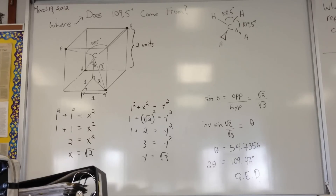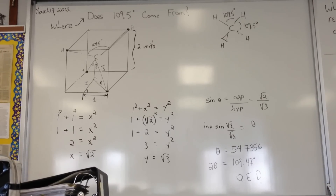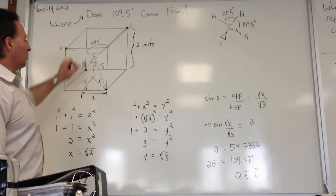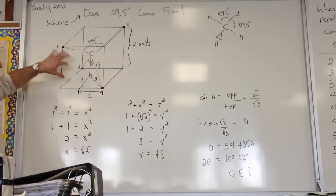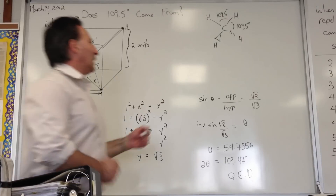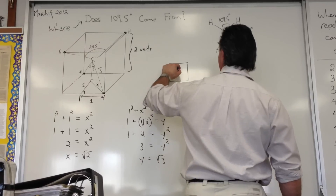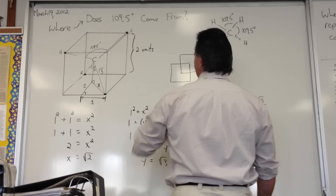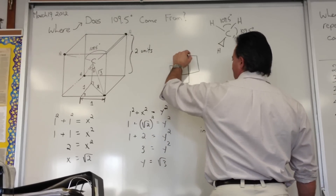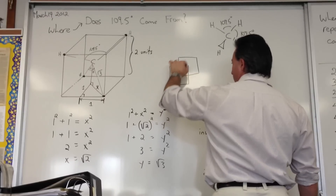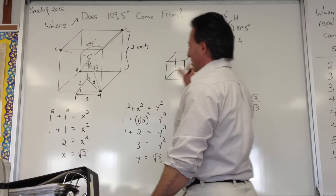I've drawn a molecule that's a tetrahedron with sp3 hybridization, like a methane molecule. One way to show the bond angles is to draw the molecule inside a cube. To draw a cube in correct perspective: make a square, find the center of the first square, draw another square on the same side starting from the corner, then connect all the corners together.